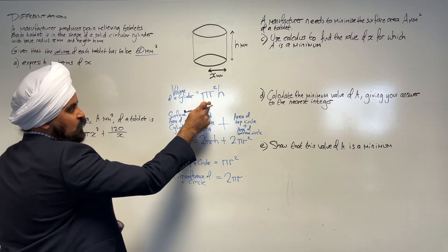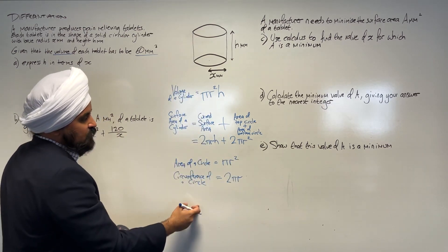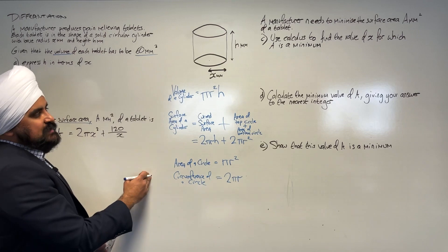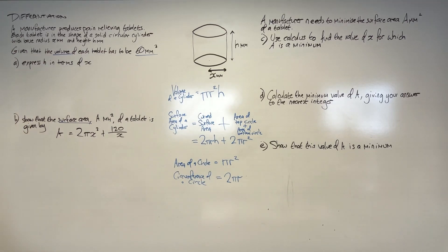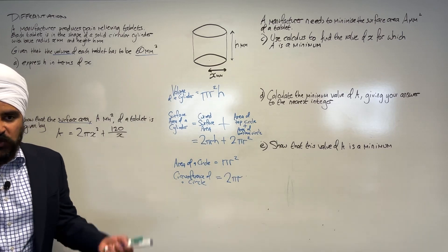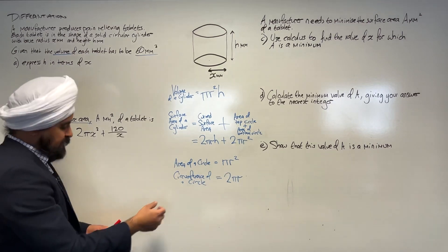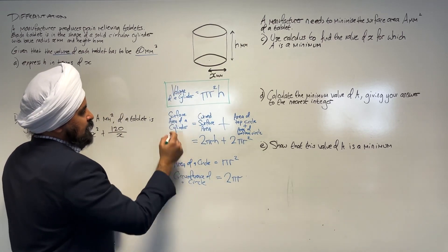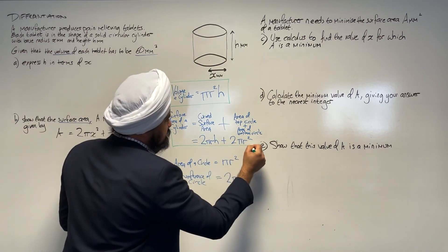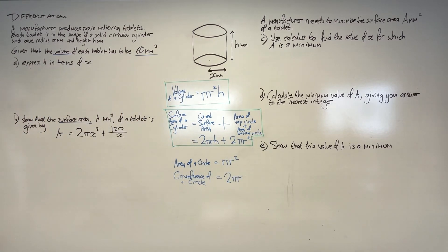You need to know this formula — the volume of a cylinder — and you also need to know the surface area of a cylinder. I've derived this from GCSE knowledge, but when you've got this question in the exam, write those formulas down straight away. If you don't know those two, you can't do this question. Make sure you memorise them and understand where they come from. The volume and surface area of a cylinder are the key tools we need to answer this question.